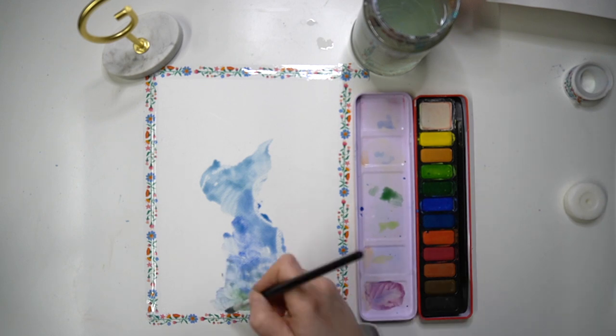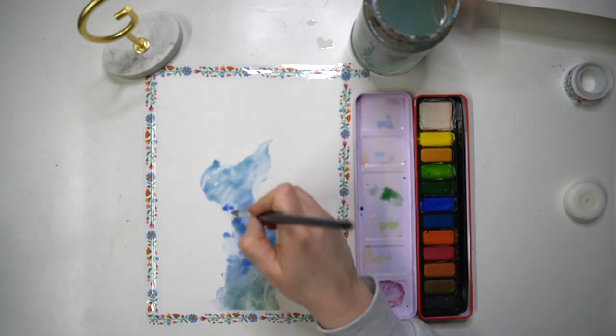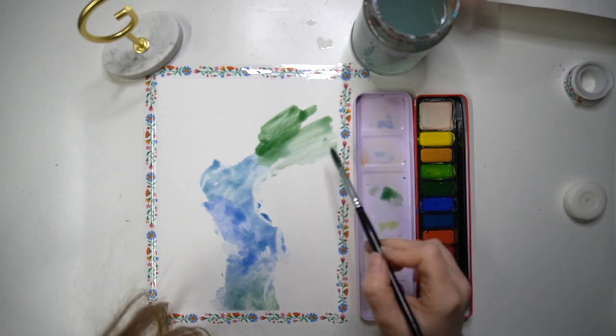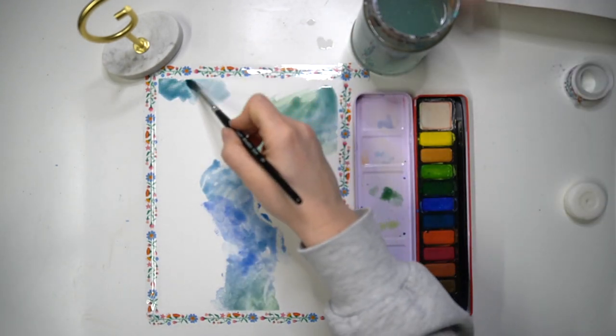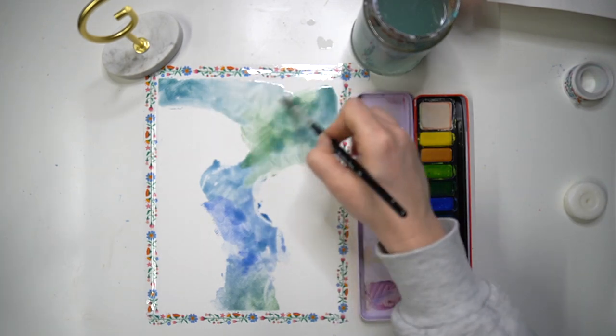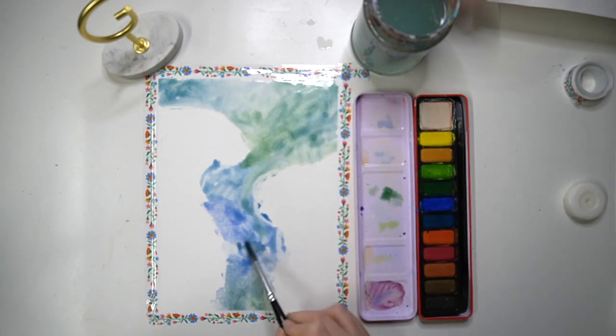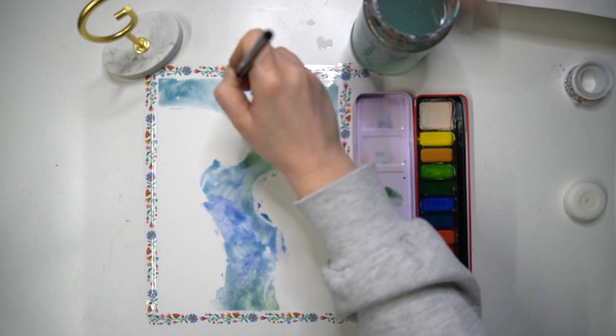Then I'm just using my wet-on-wet method to create a really loose background for my drawing and I just am going to go in with a very abstract form for this because I don't want there to be a lot of information or detail in the background of my piece.